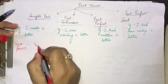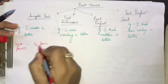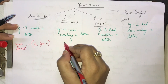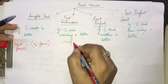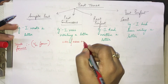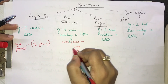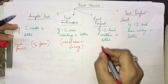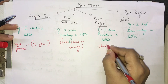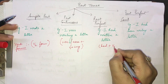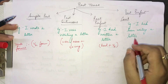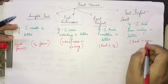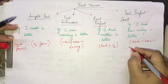Let us look at the verb forms for past tense. Simple past uses V2 form — the second form of the verb. Past continuous uses: was/were + V1 + ing. Past perfect uses: had + V3 form. And past perfect continuous uses: had + been + V1 + ing.